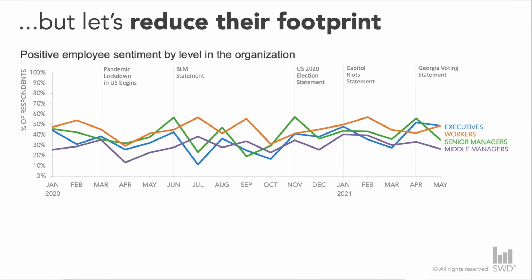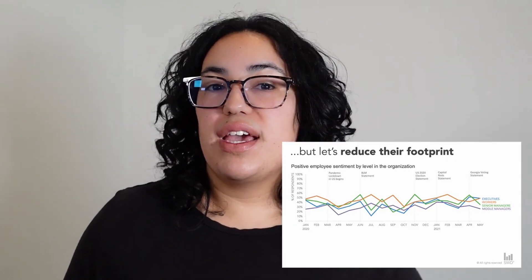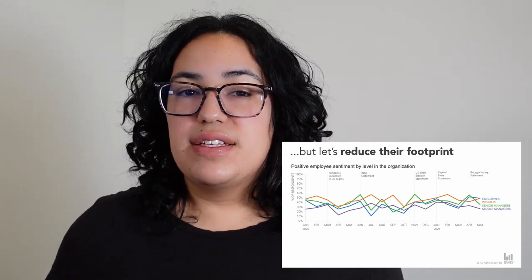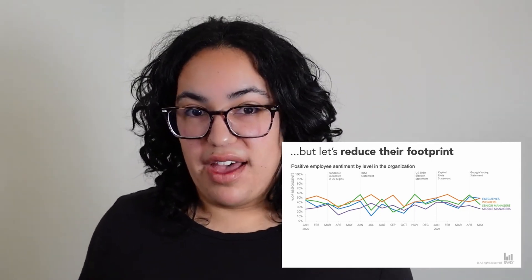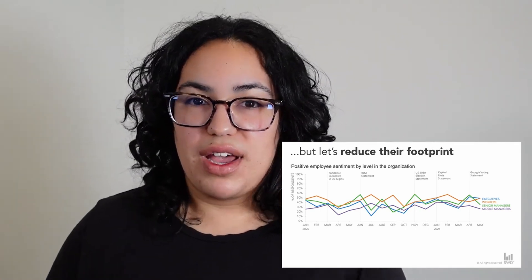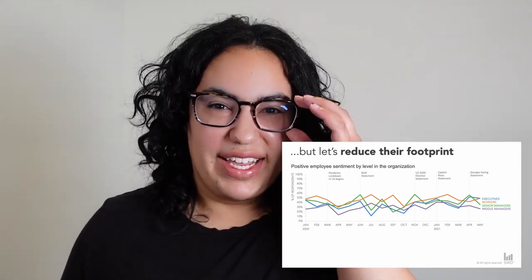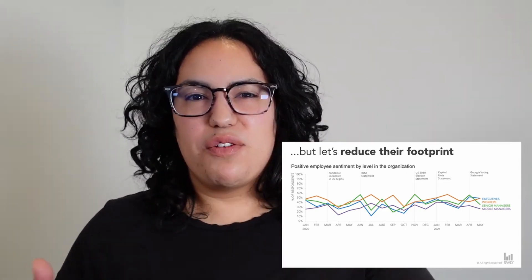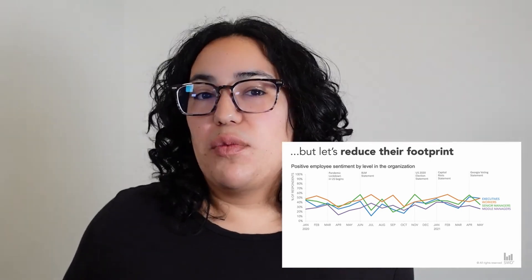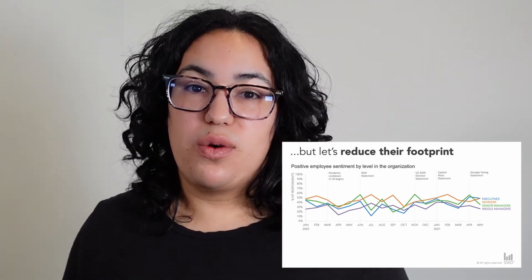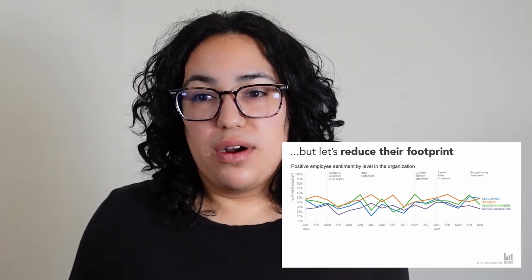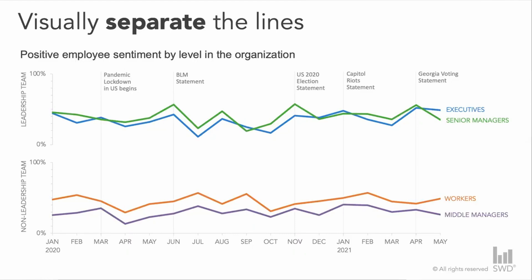When we look at the data and think about the main message — communicating that despite all these moments throughout the year, employee sentiment has stayed relatively flat — we can see that because there hasn't been much shift: an overall flat line across all four levels. The challenge is that when we focus on the data, those colors and overlapping lines feel busy. One option is to aggregate to show only total sentiment. Or, if it's important to preserve the detail, we could physically separate the lines. I'm going to do that, grouping into leadership team versus non-leadership sentiment.